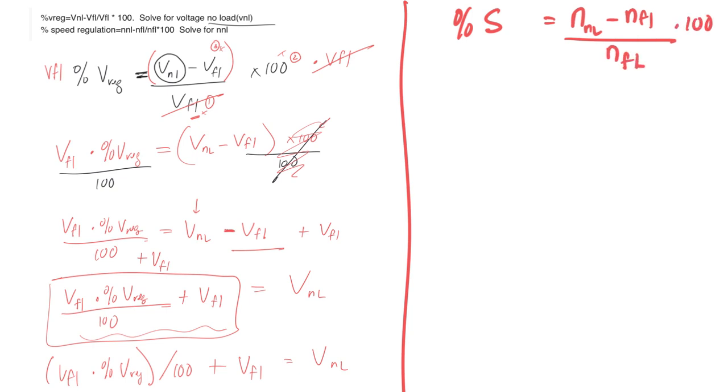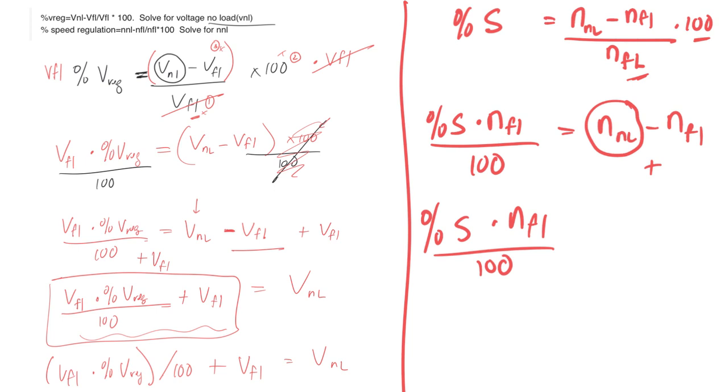So percent speed regulation is equal to NNL minus NFL over NFL times 100. So I'd do the same thing. To get rid of this, I'd multiply both sides. To get rid of this, I'd divide both sides. So I'd have percent times NFL over 100 equals NNL minus NFL. And if I'm solving for this, then I'll add NFL on both sides. So it'd be percent S times NFL over 100 plus NFL equals NNL.